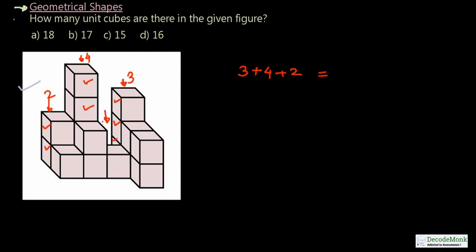Now coming to the second row, we have got one, and then in the bottom there will be two. So this has got two unit cubes. Let me write that down over here: two. Plus this has got one cube, so one.